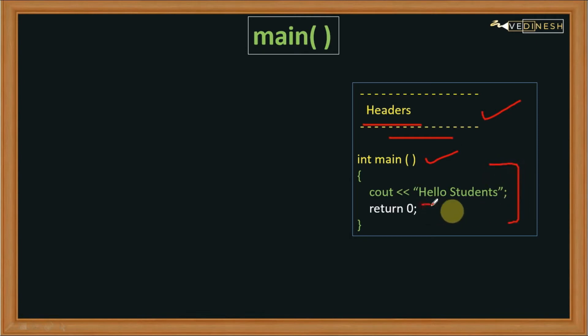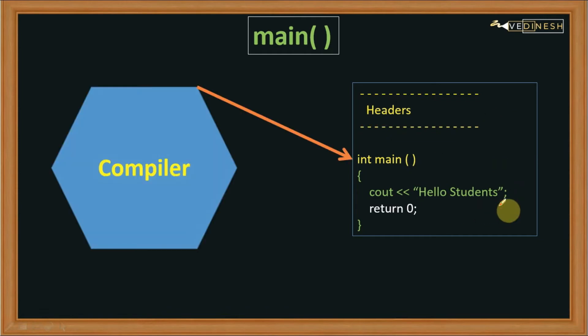Like we are printing a message. So the main function is the place where your compiler starts reading. Your compiler starts reading from this place only. Now you might be thinking, why is it reading from this place only?